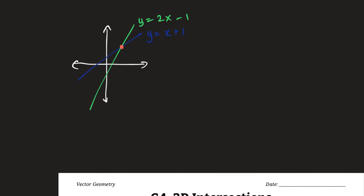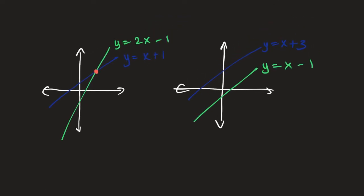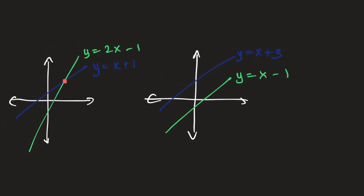Is that the only way two lines can intersect in 2D? Well, what happens if those lines are parallel? What happens if we have a line like this and a line like this? Let's just come up with an equation for that. Let's do y equals x plus 3, and y equals x minus 1. We know that these two lines are parallel because they have the same slope of 1. But how many points of intersection do they have? The answer should be none — they're parallel to each other. So what happens when we try to solve for that point of intersection the same way? The easiest way to do it is just by substitution.